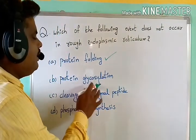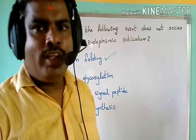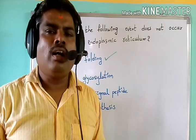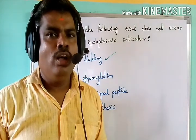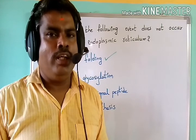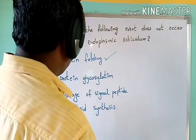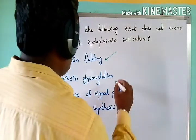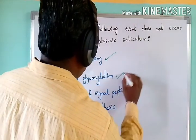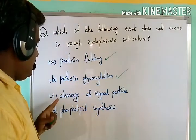Option B: protein glycosylation. After formation of protein in the rough endoplasmic reticulum, some carbohydrate moieties are also attached to the newly synthesized protein. So protein glycosylation also takes place inside the rough endoplasmic reticulum. This statement is also correct for RER.